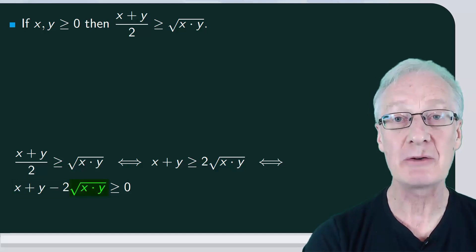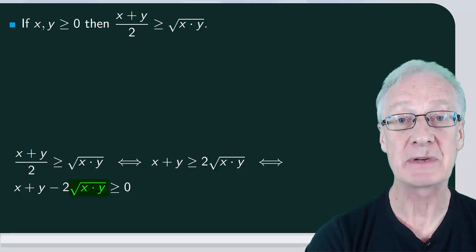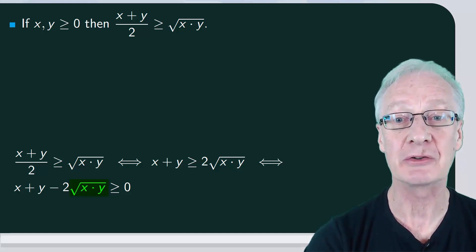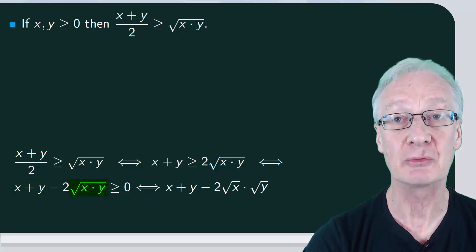First, the square root of a product is the product of the square roots. And x and y must be greater than or equal to zero to be able to take their square roots. Then we obtain that x plus y minus 2 root x root y is greater than or equal to zero.